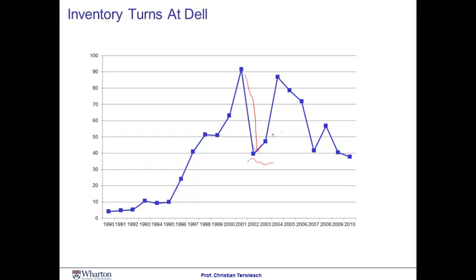Dell restored inventory levels subsequently. The more recent downfall of inventory turns has to do with the change in Dell's business model. More recently, Dell has emphasized making many other things than make-to-order computers, including televisions, PDAs, and other things. These things oftentimes are held in Dell's inventory, which has hurt Dell's inventory turns.